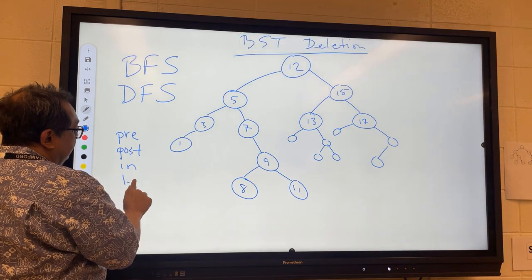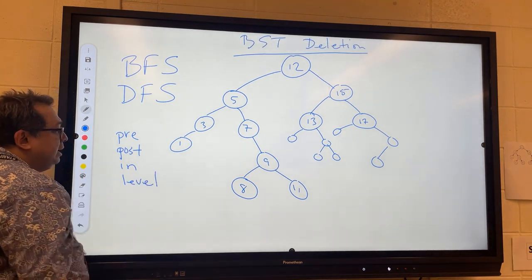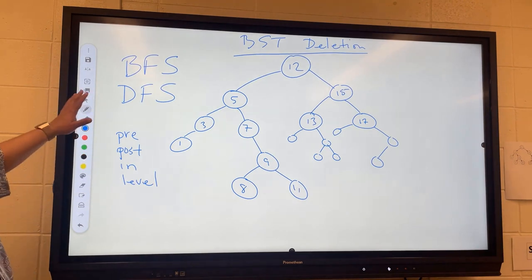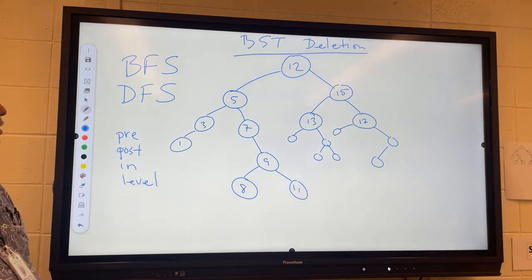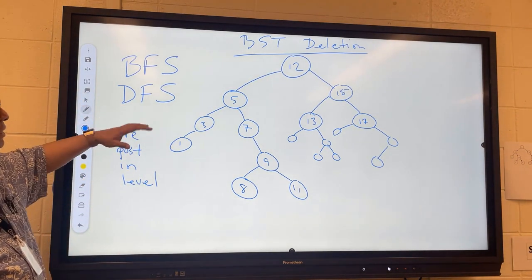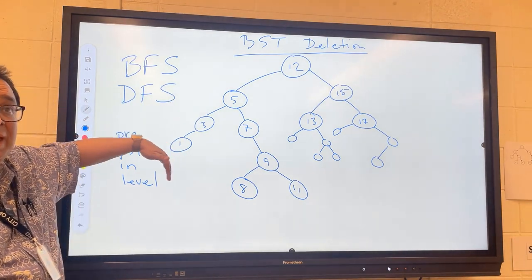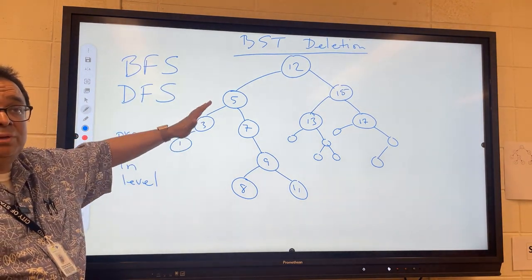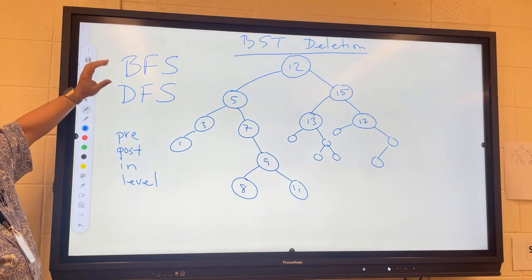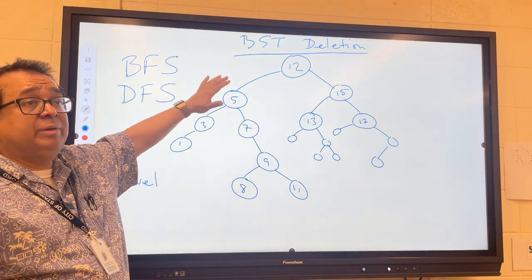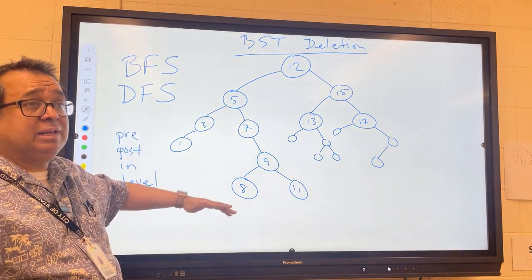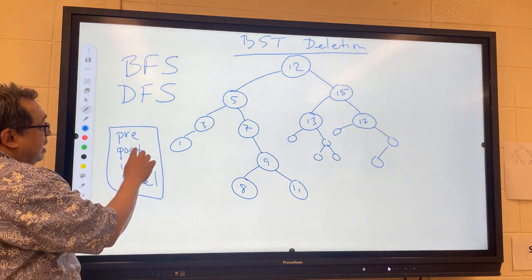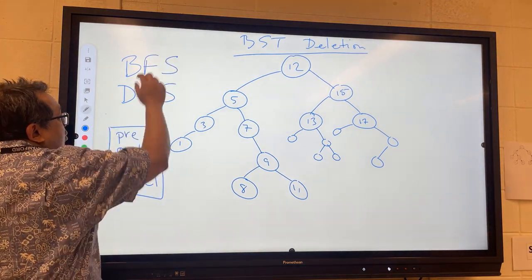It turns out that three of these fall into one category and one falls into the other. Here's a hint: depth-first means we go down as far as we can first, and then come back up slowly. Breadth-first means we exhaust a particular level before we go down to the next level. See if you can figure out which algorithms go into which category.